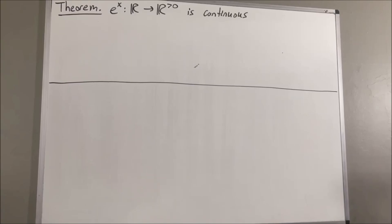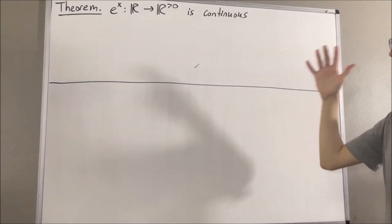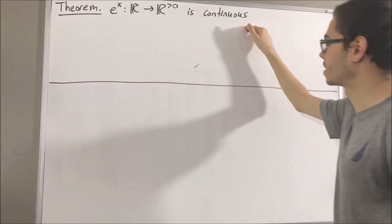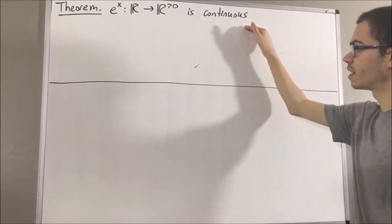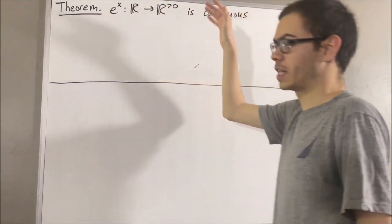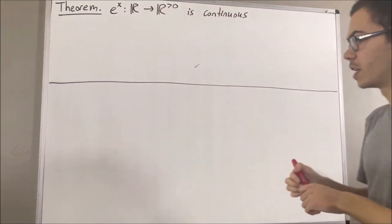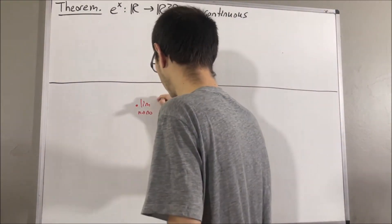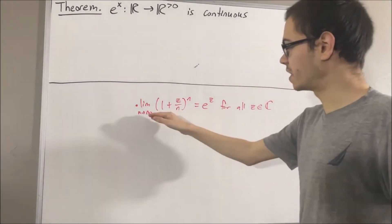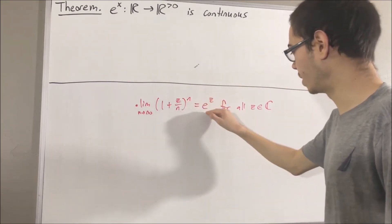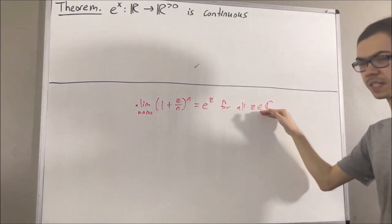Hello! In this video, we are going to give a second proof that the exponential function is continuous. We've also been working with the exponential function over the complex numbers. For us, the exponential function is the following: the limit of the sequence (1 + z/n)^n is equal to e^z for all complex numbers z.